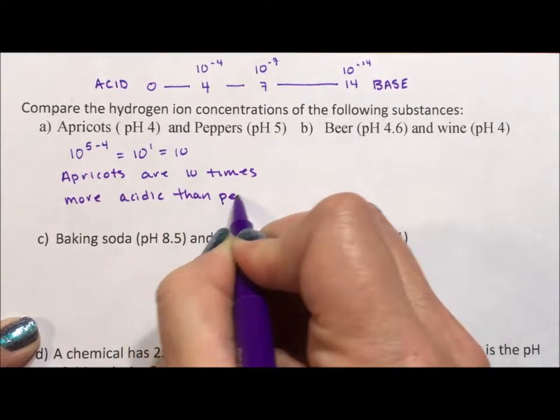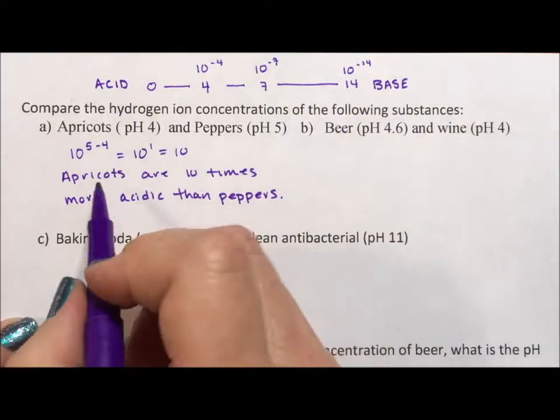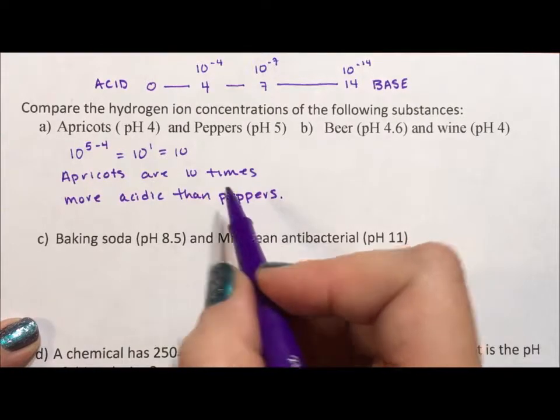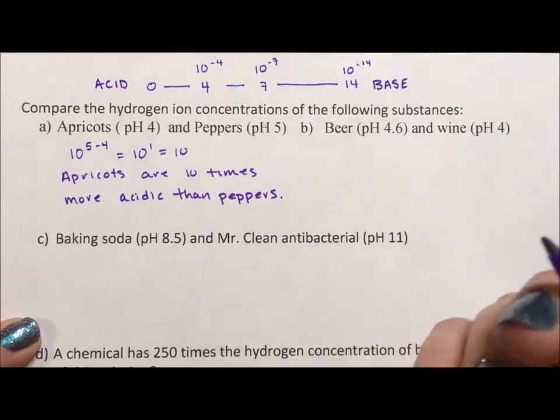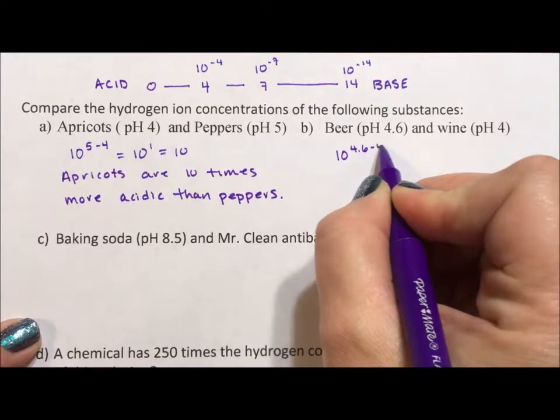And I know that is acidic because like I said the smaller the number the more acidic it is. I could have written that peppers are 10 times more basic than apricots. The calculation is done the same way no matter what. When we do this calculation we always do the big number minus the small number.